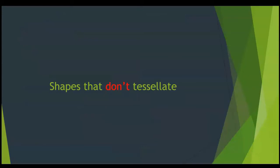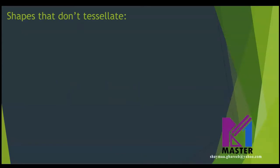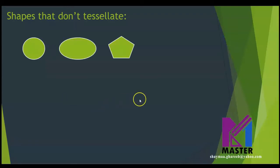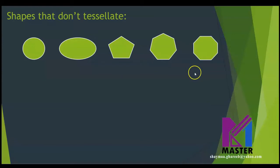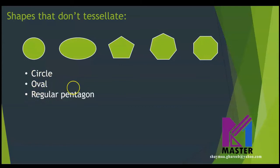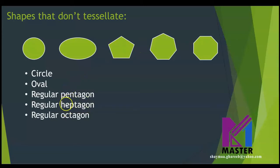Now let's see shapes that do not tessellate. Let's start with very famous shapes that never tessellate, such as the circle, oval, regular pentagon, regular heptagon, and regular octagon. Remember that any shape that has seven sides is called a heptagon, and any shape that has eight sides is called an octagon.